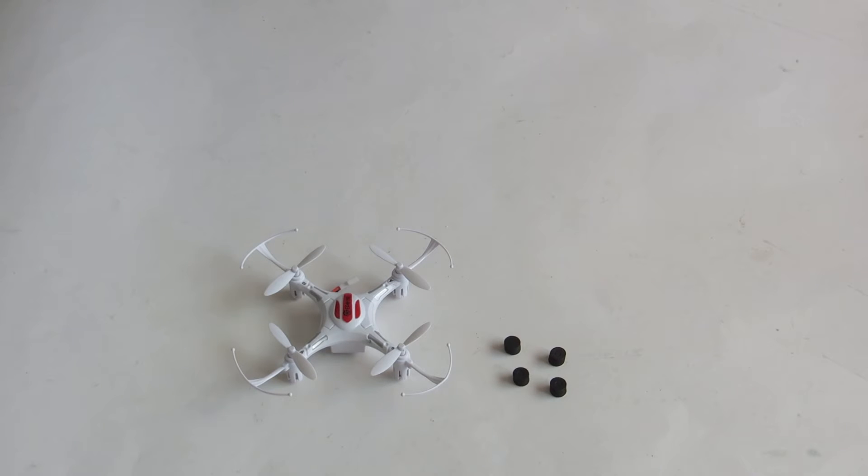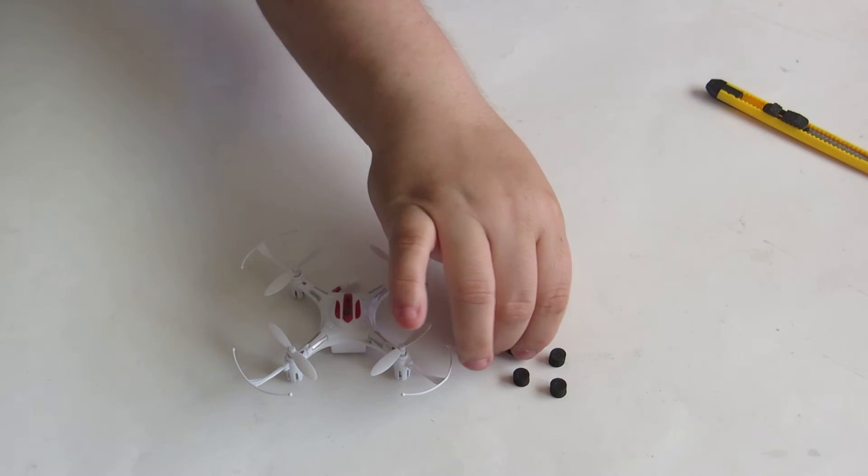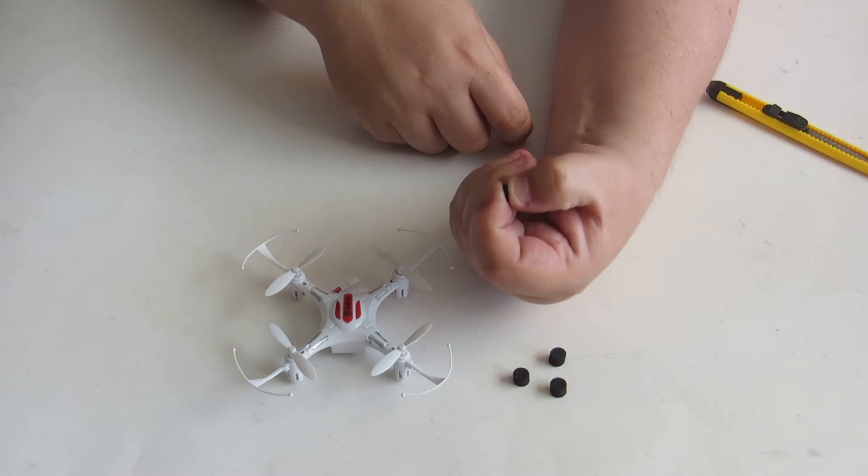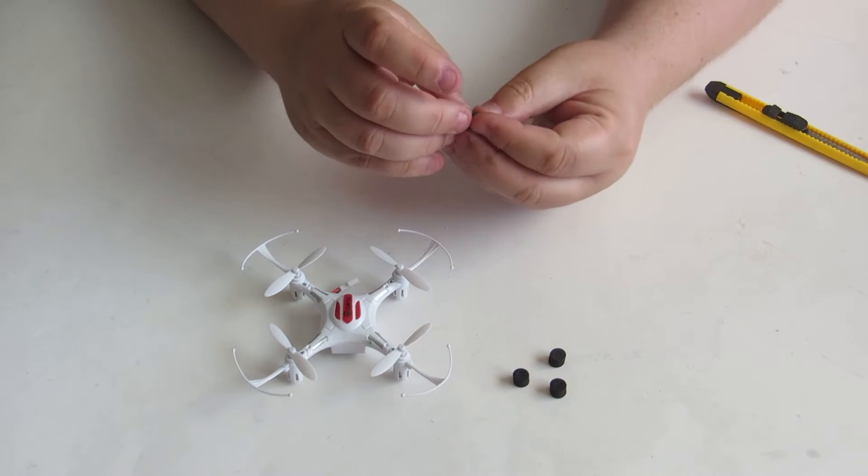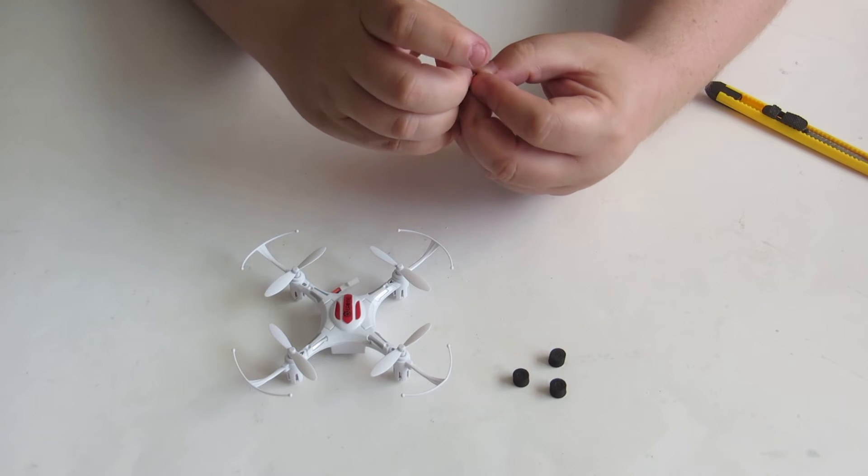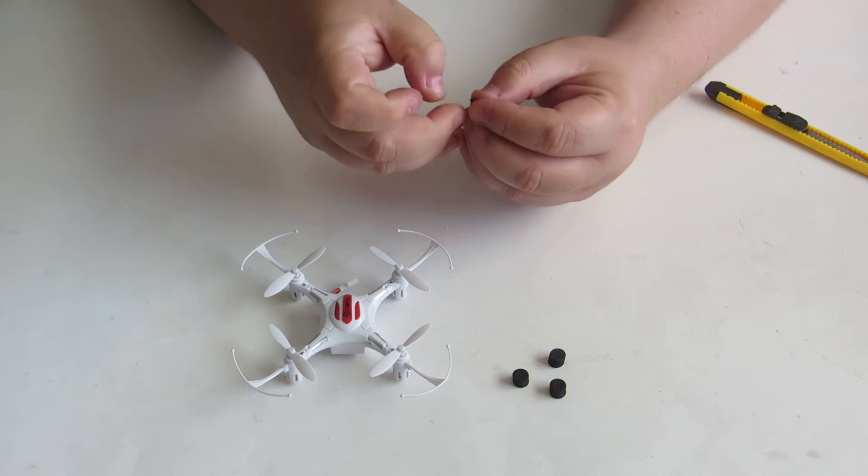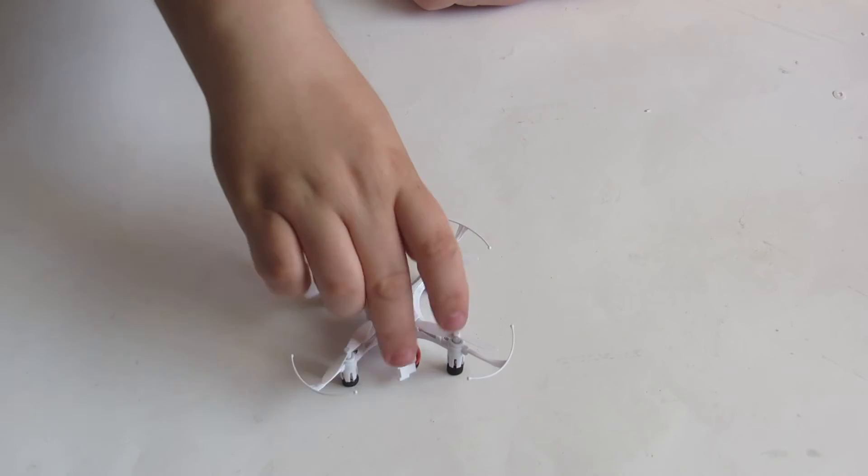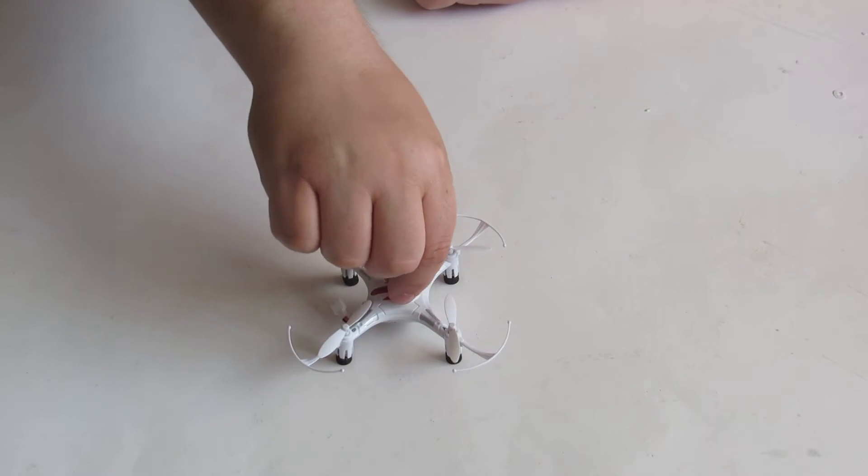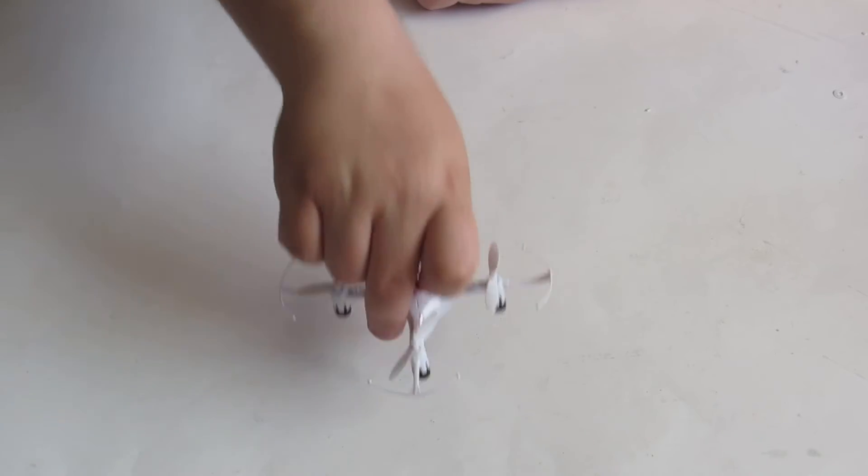You might want to install these foam feet under the quad. They soften those hard landings that you eventually will get. Just peel off the adhesive part and stick them on. They will get the job done.